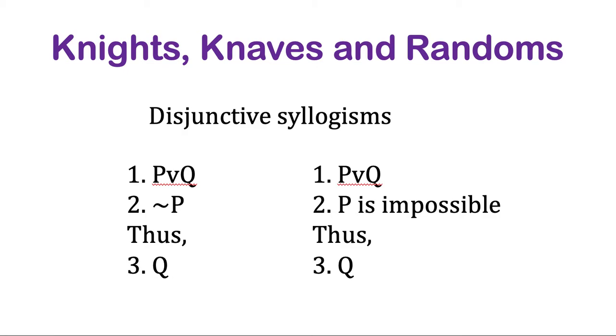The type of reasoning that's sometimes employed in these is called the disjunctive syllogism. It's a type of common reasoning from a disjunction. Both of these examples right here have the same idea behind them. Let's say you know some premise P or Q, and you also know P can't be true. Well, if one of those is true and it's not P, then it's got to be Q.